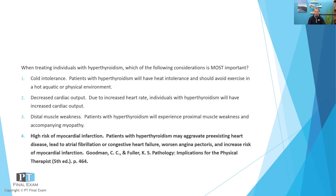So the correct answer is: when treating individuals with hyperthyroidism, high risk of myocardial infarction is the most important consideration. There are many systemic manifestations of hyperthyroidism. It affects the gastrointestinal system — you get hypermetabolism, increased peristalsis, increased bowel motility. Musculoskeletal effects include muscle fatigue, myopathy, and chronic periarthritis. The key thing to remember about hyperthyroidism is the increase in metabolic rate, which leads to heat intolerance, increased cardiac output, proximal muscle weakness, exophthalmos (bulging of the eyes), and high risk of myocardial infarction and other arrhythmias.